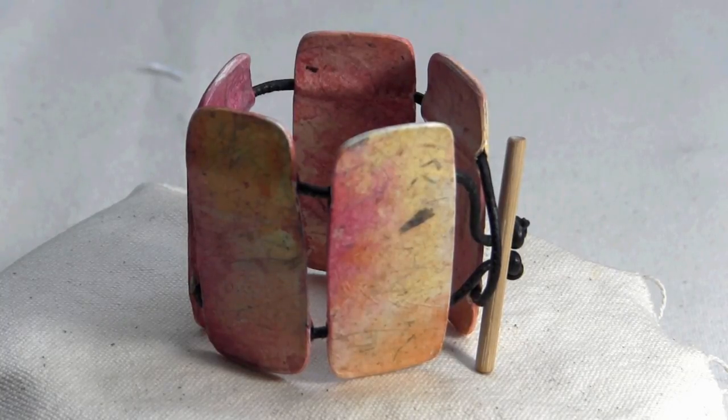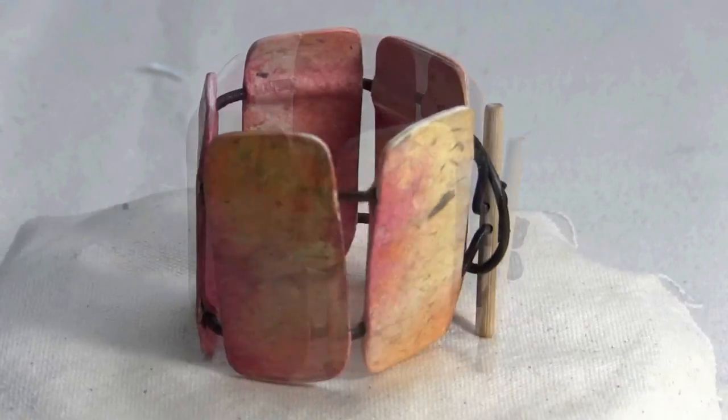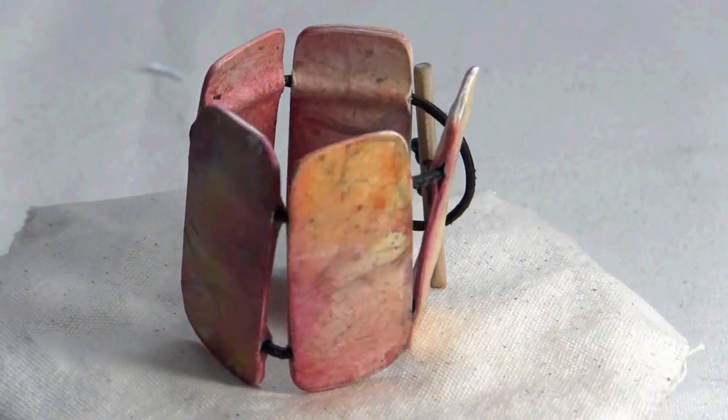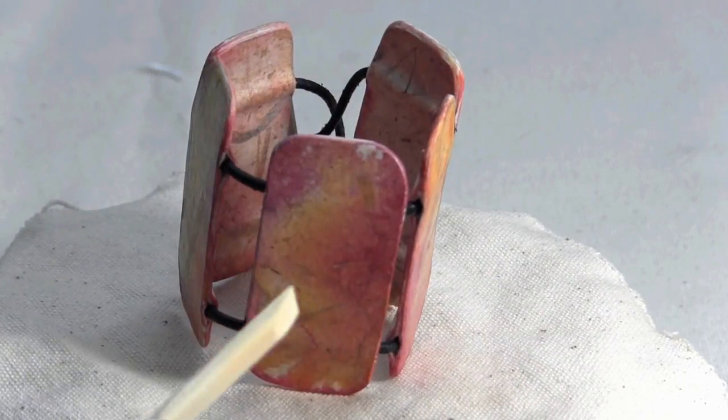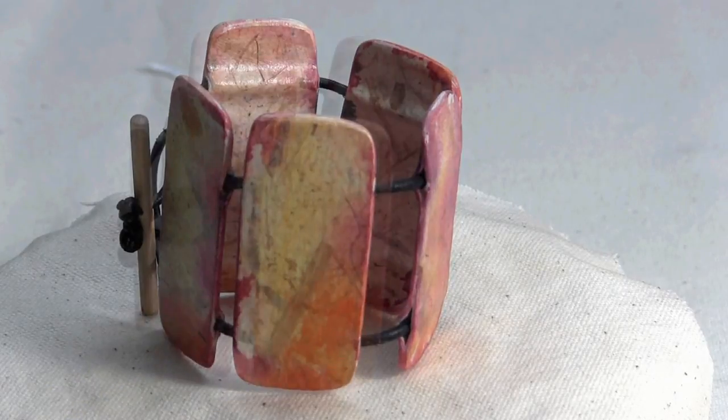The example that you see here is a bracelet that I constructed at one of my live workshops. I chose a simple rectangular shape for my unit forms, which I happen to like a lot. I often make jewelry using this shape.